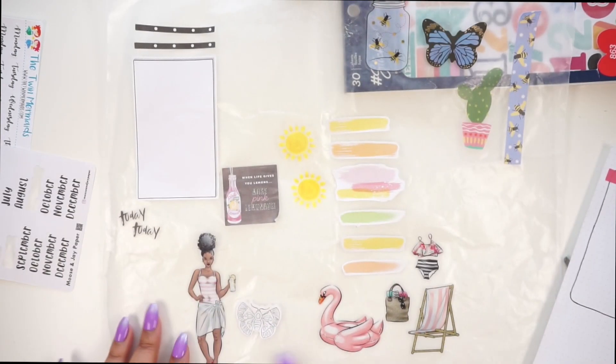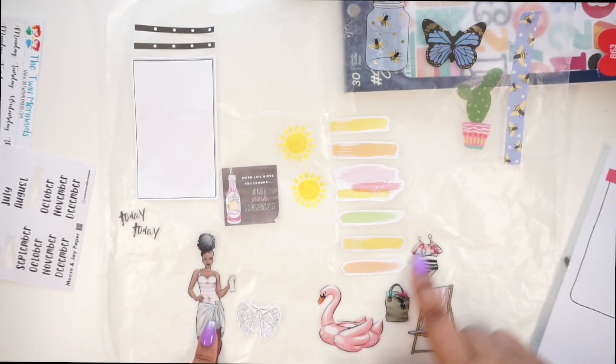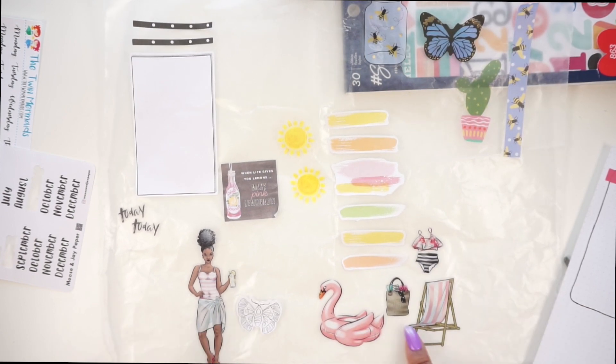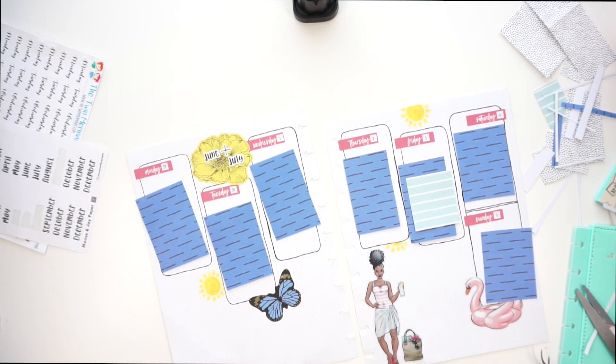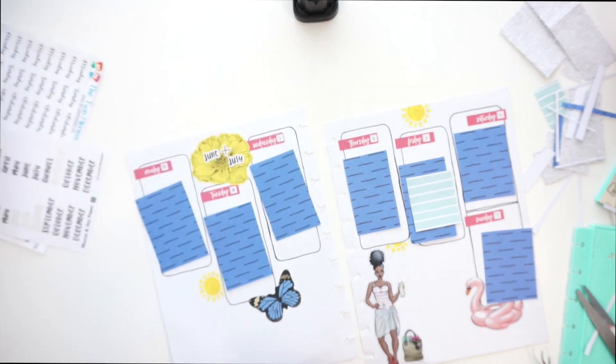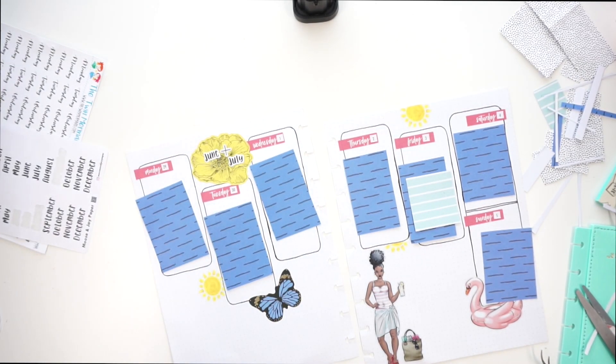The stuff that you see at the bottom, her and then all of this poolside stuff is from the Girls sticker book from Agenda 52. All right y'all, I'm back and I took a lot of stuff off the spread because I wasn't feeling it. It was just not looking clean enough for me.